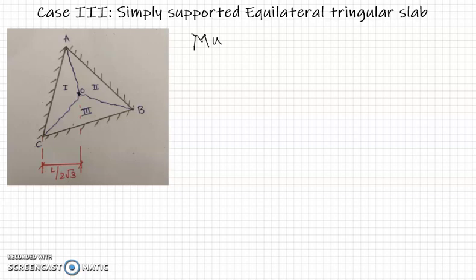When it is simply supported, the three yield lines will divide the slab into three symmetrically placed sectors. The distance of point O from edge AB, AC, or CB will be equal to L upon 2 root 3, which is given in the figure.